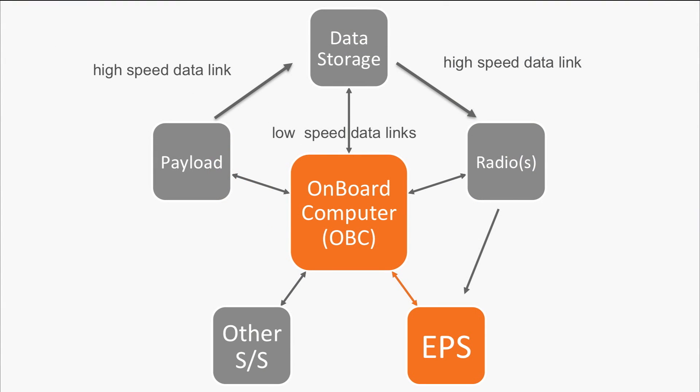The OBC receives commands from operators on the ground via the radio receiver. The OBC also sends packets of housekeeping data to a low-speed radio transmitter, such that operators on the ground can monitor the spacecraft health.